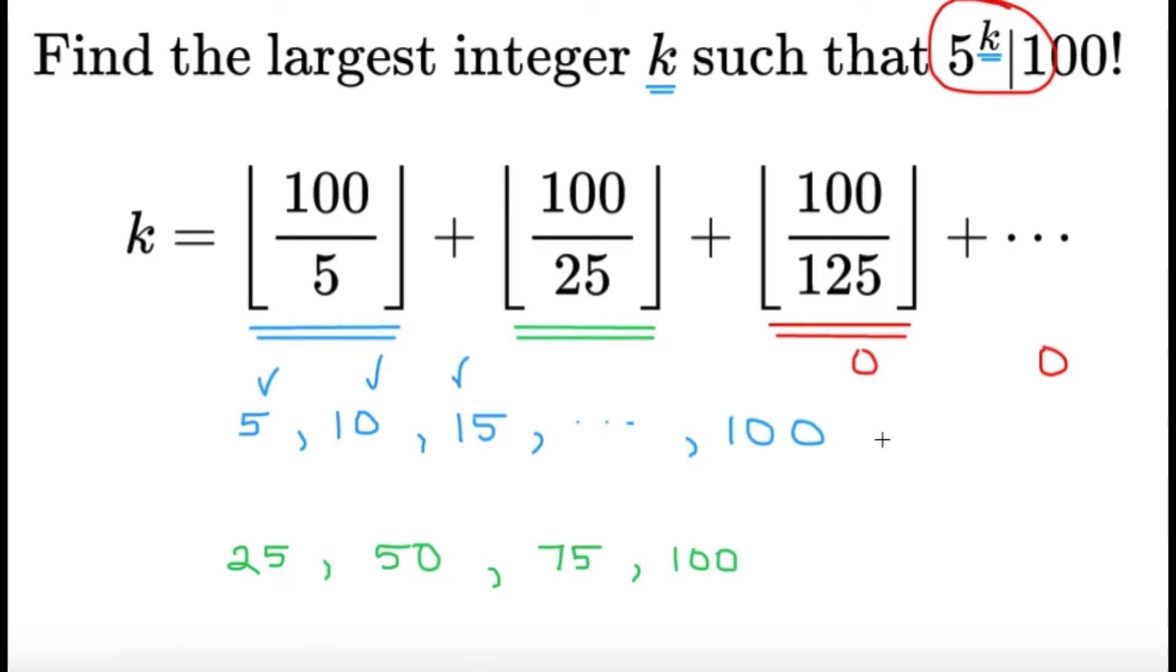We're counting the number of multiples of 5, so 5, 10, 15, all the way up to 100. And you can easily count that there are 20 of these, which is going to be equal to the floor of 100 over 5. And then the next part, we're going to count the multiples of 25 because multiples of 25 contain 5 squared. So, we're going to count them again because they contribute another power of 5. So, here there are 4. And this is going to be true for all the prime numbers as well. Generally speaking, the Legendre's formula is just counting multiples.